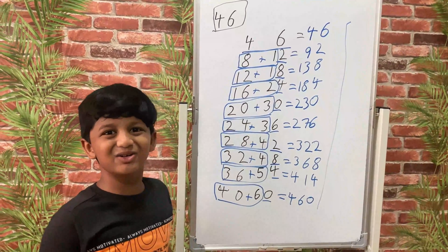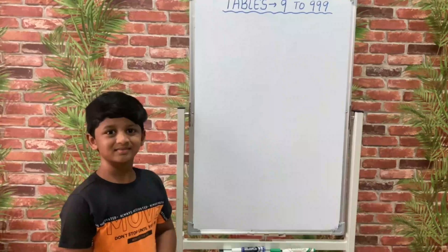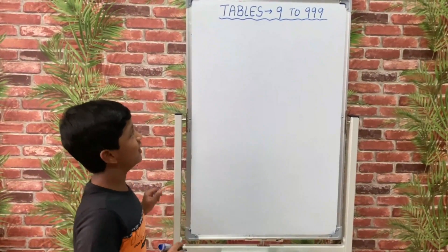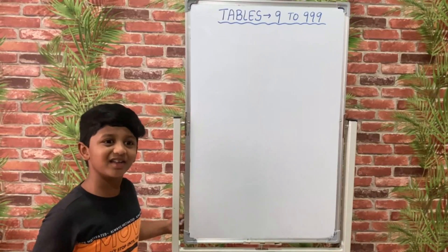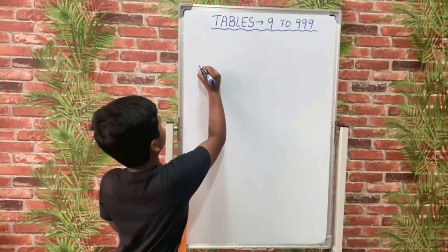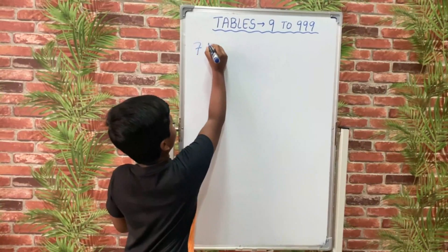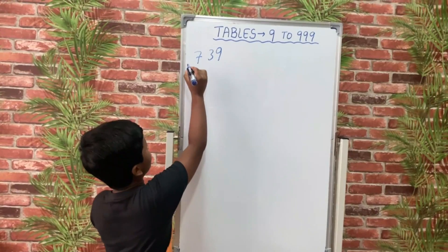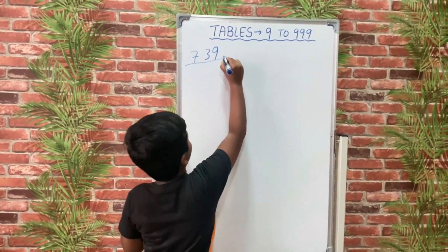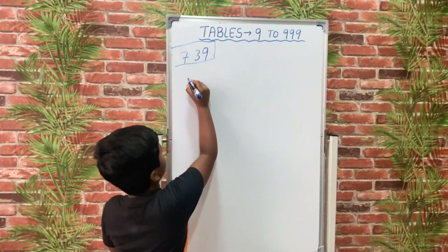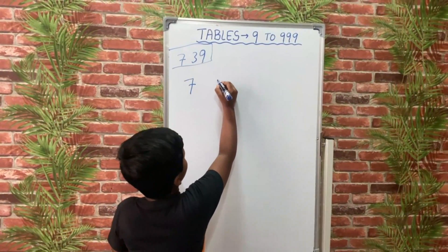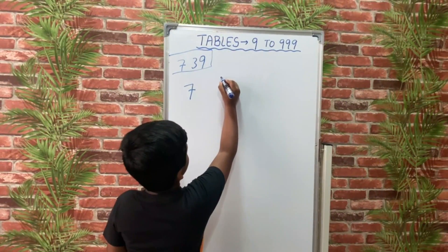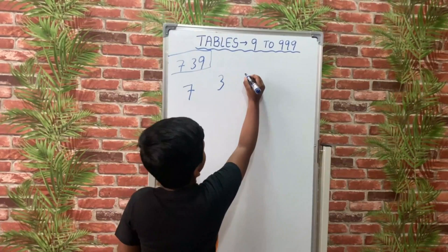See, it is so easy! Now let's take one more example, which is a 3-digit number. Let's take the 739th table. We separate the digits: 7, 3, 9.